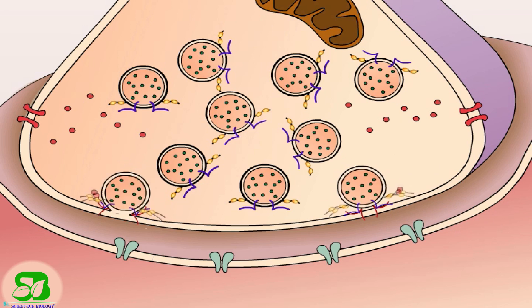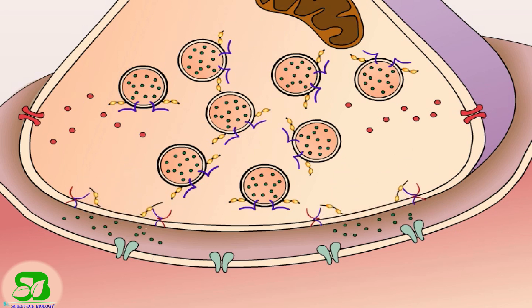The vesicles fuse with the axon terminal membrane and release their transmitter into the synaptic cleft. Some of the transmitter molecules bind to receptor molecules in the postsynaptic membrane. The response of the postsynaptic cell — either excitation or inhibition — depends upon the particular neurotransmitter and receptor combination.